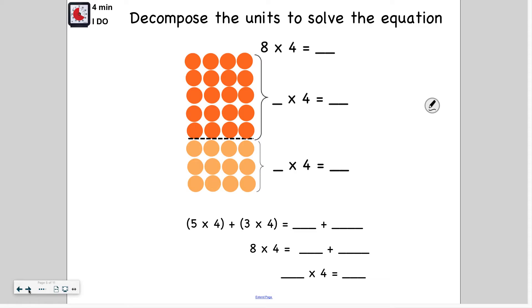So let's look at one together. Watch me solve this one. So I want to decompose the units to solve the equation. I have eight times four. So I don't know what eight times four is, but I can use smaller numbers that add up to eight to help me figure out what eight times four would be. So here I see they have five rows. So this would represent five times four. And this is three rows. So this would represent three times four. So I can use these facts to help me figure out what eight times four is.